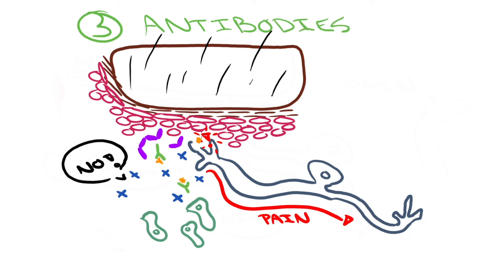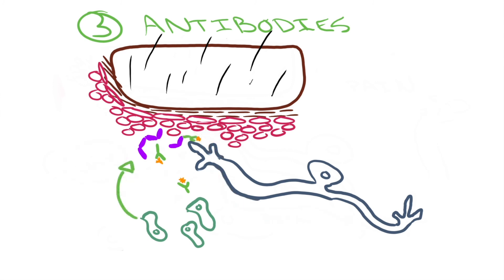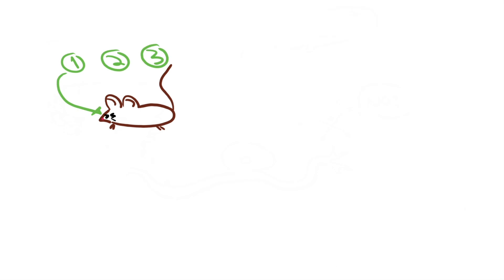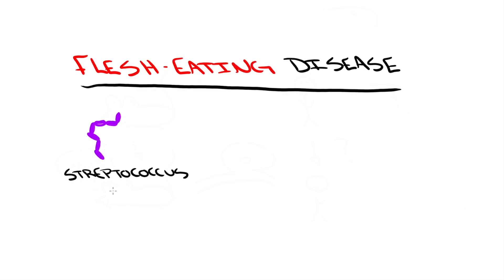The third method is specific to strep pyogenes infections and uses an antibody to block the pore-forming SLS protein from creating holes in the neurons. All three of the treatments were effective for the mouse patients, but the next step is to try them out in the human ones. Flesh-eating disease caused by streptococcus takes advantage of the nervous system talking to the immune system.